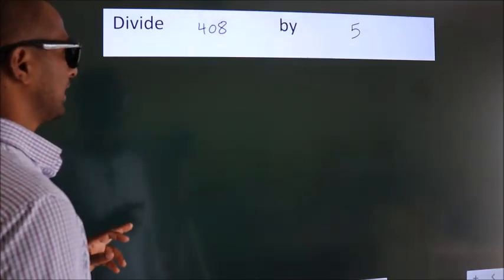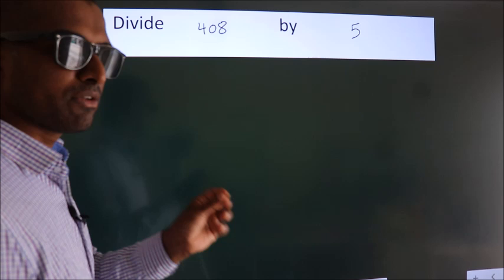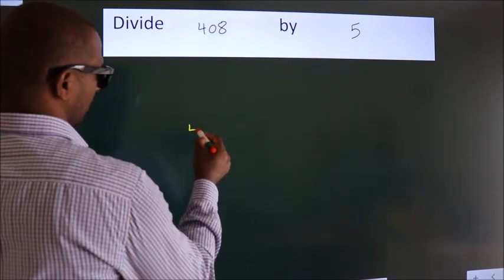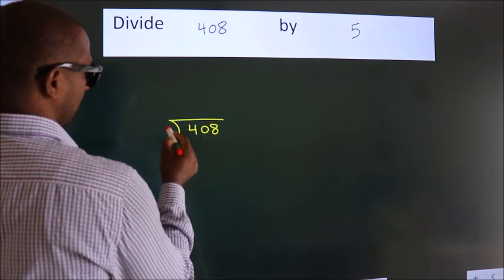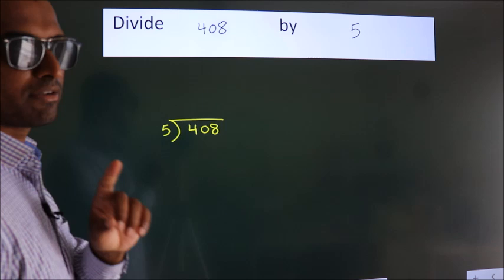Divide 408 by 5. To do this division, we should frame it in this way. 408 here, 5 here. This is your step 1.